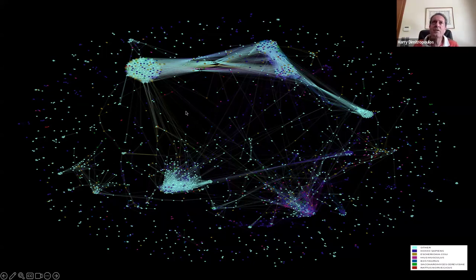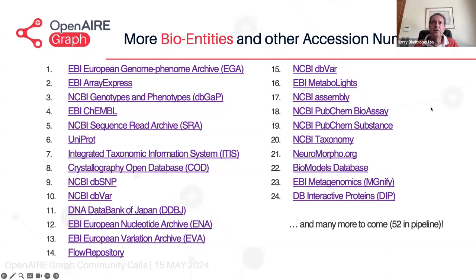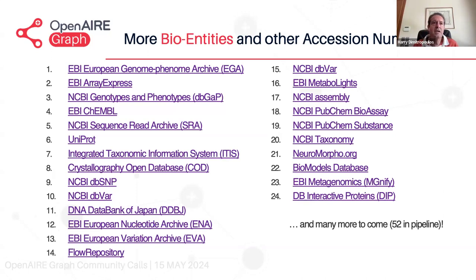We can also use PDB entries to do further mining for biology applications. My colleague Eleni Zaharia has developed 52 different bioentity mining modules for accession numbers — not only for bioentities but also for chemical, meteorological, and other kinds of entities. This was in a collaboration with Springer Nature, and these will soon be integrated in the graph — they're actually in the process of being merged.